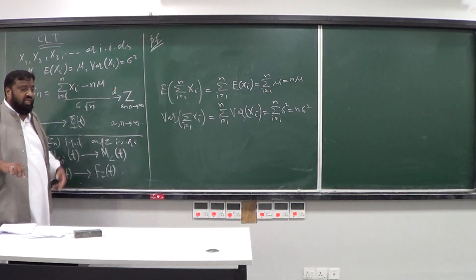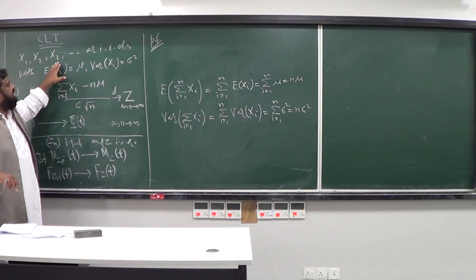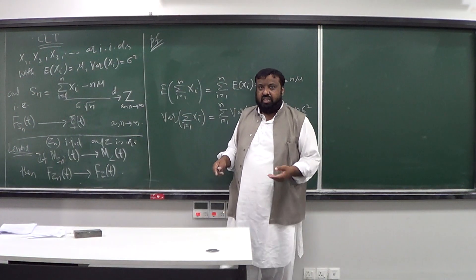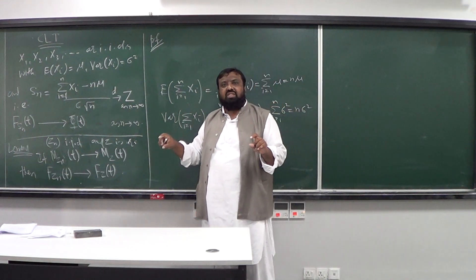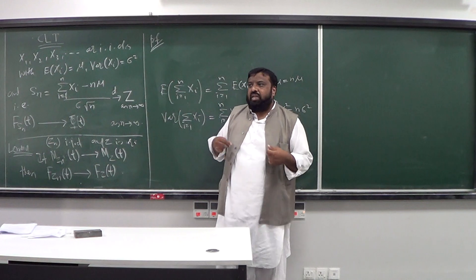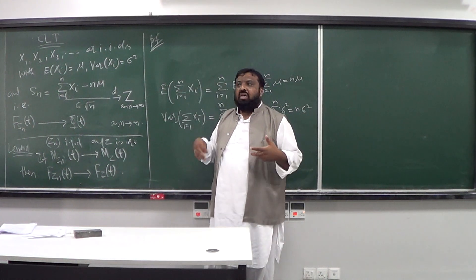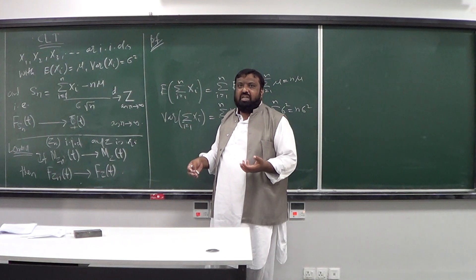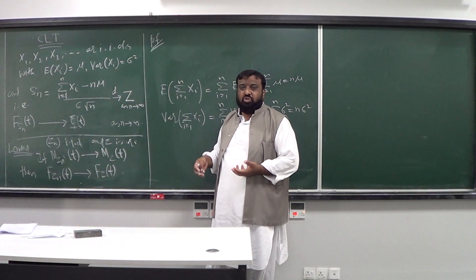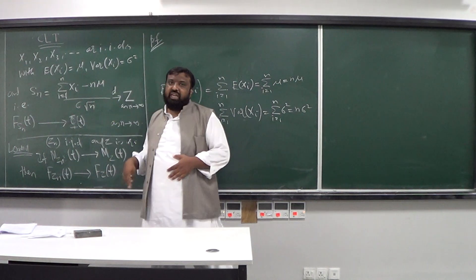We're going to write a better version of the CLT soon, but first we'll prove this version. Imagine you have a sequence of IIDs — a sequence of random variables that are independent and identically distributed, with mean μ and variance σ². When I say identically distributed, all of these random variables follow the same distribution — all binomial, all multinomial, all hypergeometric, all geometric, and so on — with the same expectation and variance.